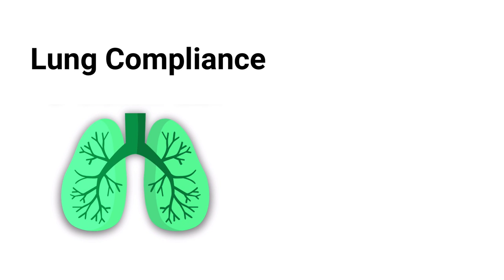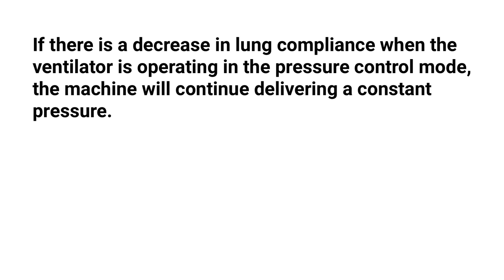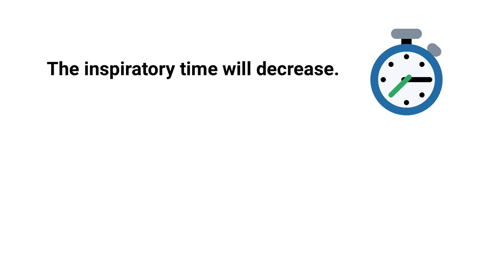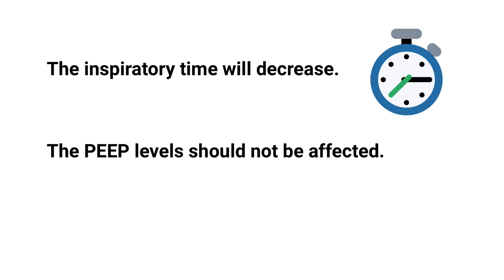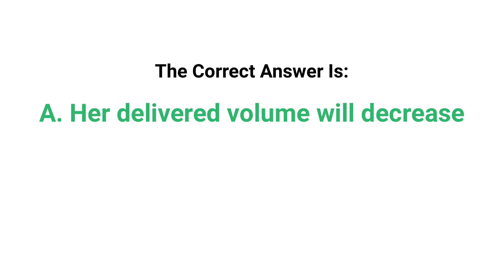To get this correct, you must understand lung compliance and recognize that the ventilator is in pressure control mode, meaning the pressure is preset. If compliance decreases during pressure control ventilation, the machine continues delivering a constant pressure, but since the lungs don't expand as much with decreased compliance, the set pressure limit is reached much faster — resulting in a decreased tidal volume. The inspiratory time will decrease, and PEEP levels should not be affected.